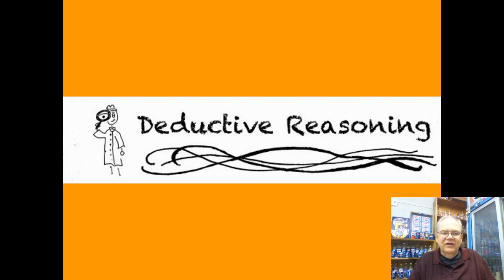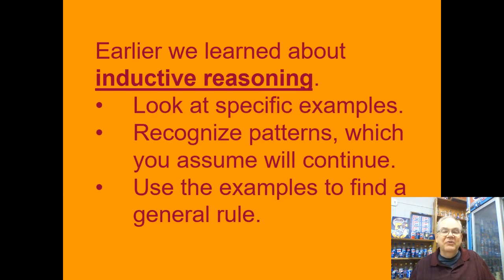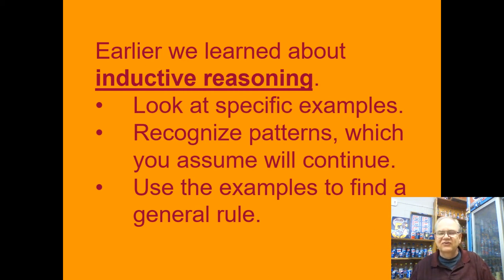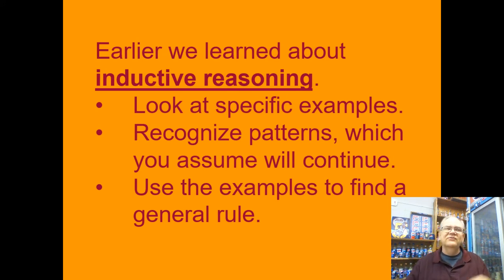Today we're going to take a look at the next key topic that comes up in Chapter 2 of your book, which deals with deductive reasoning. You might remember that last week we talked about inductive reasoning — that was where you looked at specific examples and tried to recognize patterns and figure out what was going to come next. You started with specific examples and worked your way toward general conclusions.